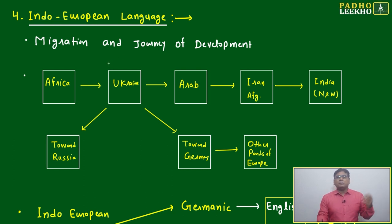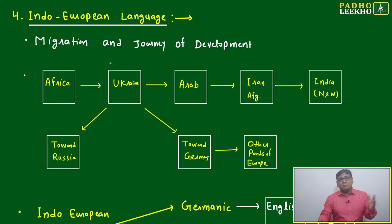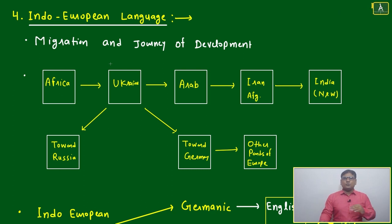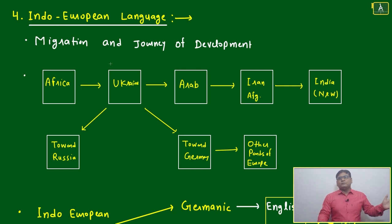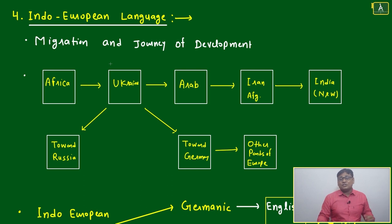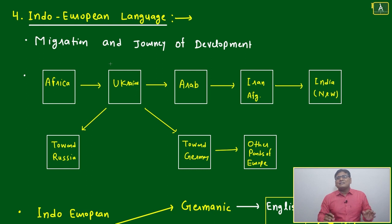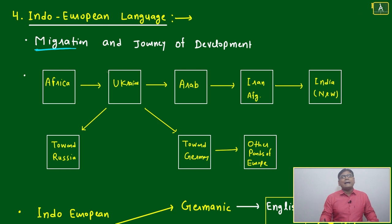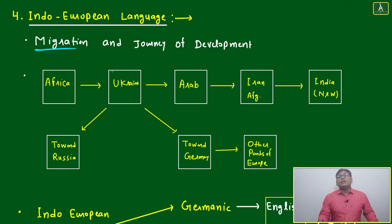Multiple migrations happened over thousands and thousands of years, and that has given rise to the development of humans. Just think — if we had a time machine and could go back 10,000 or 20,000 years — if migration had not happened, not a single piece of scientific literature could have developed. Everything happened because people started to migrate and mingle with other communities.